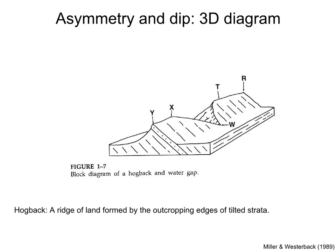A hogback is one example. This is a ridge of land formed by the outcropping edges of tilted strata. It has a slope parallel to the dip on top of the strong rocks, which we call the dip slope, and a concave upward slope opposite to the dip direction in the weak rocks, which we call the scarp slope.